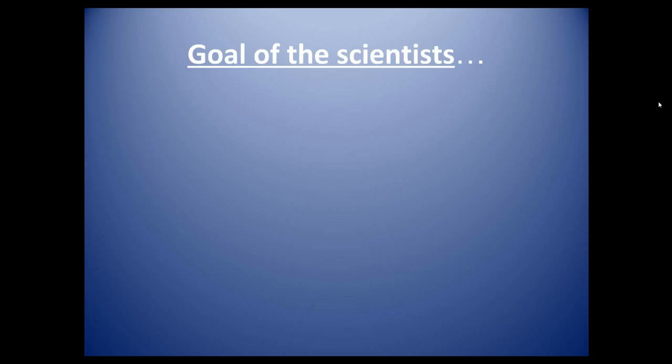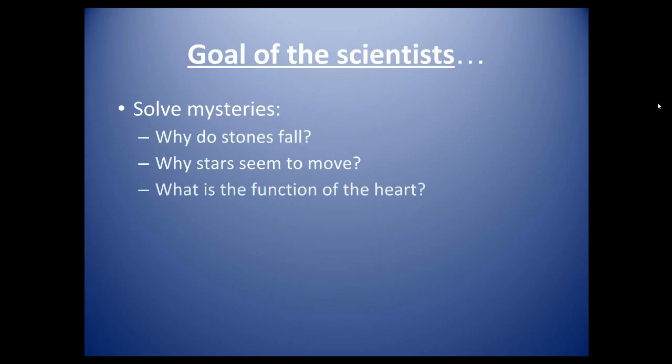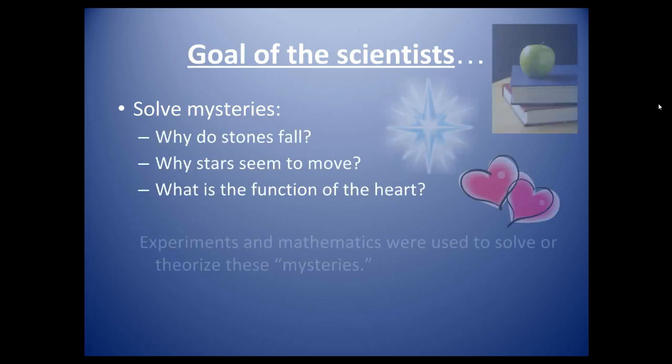The scientists of the scientific revolution had many goals. Their main goal was to solve mysteries, mysteries that could not be explained. These included: why do stones fall? Why stars seem to move? And what is the function of the heart? Some examples.